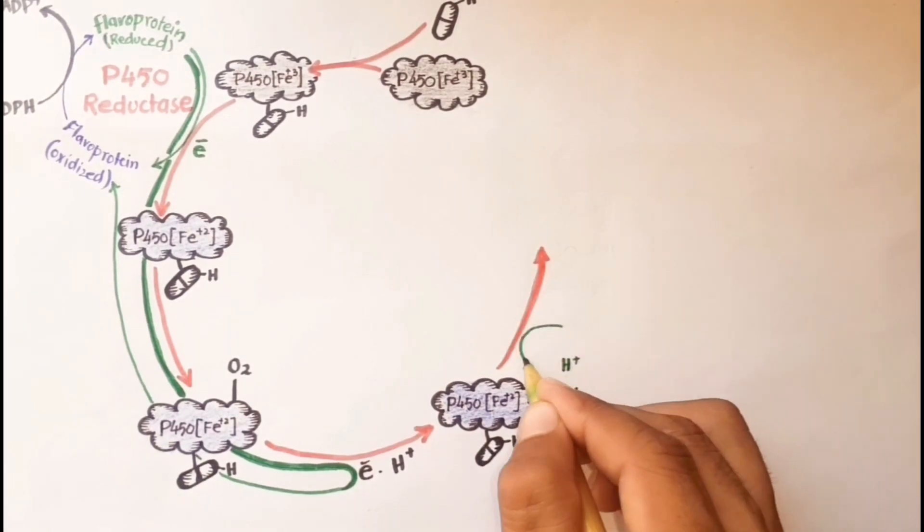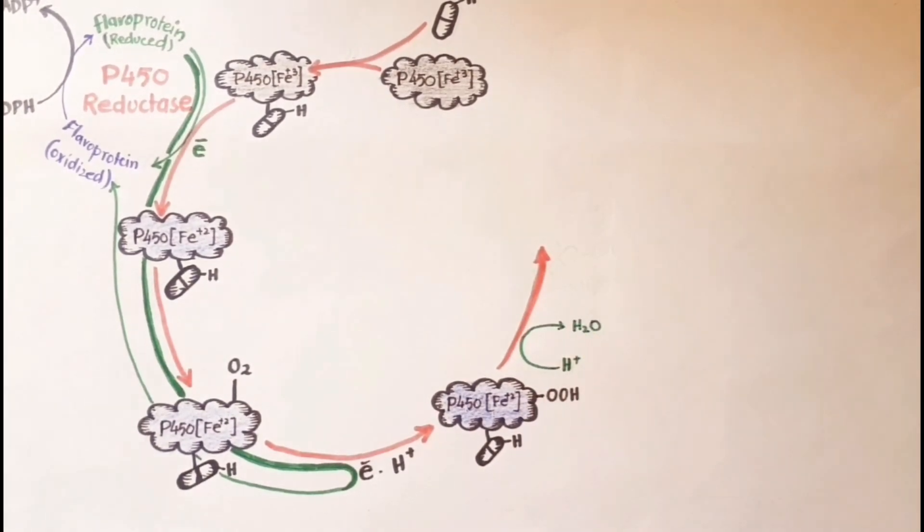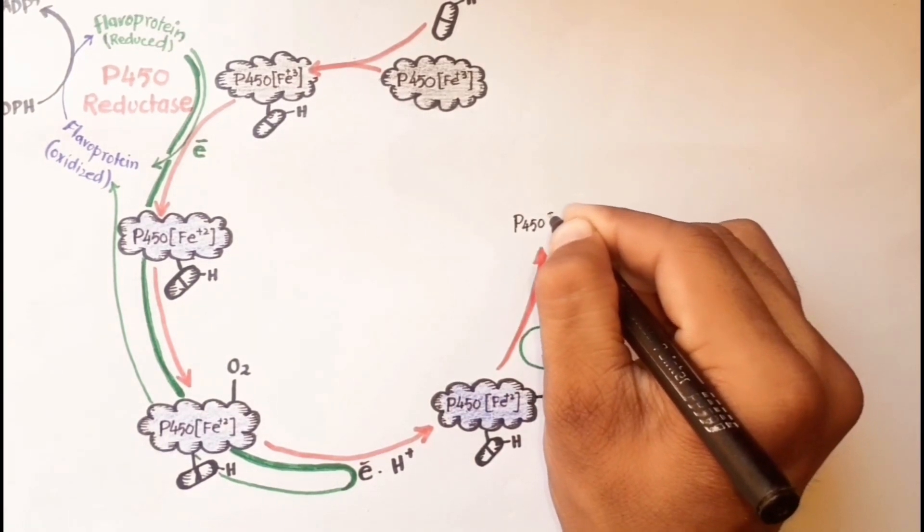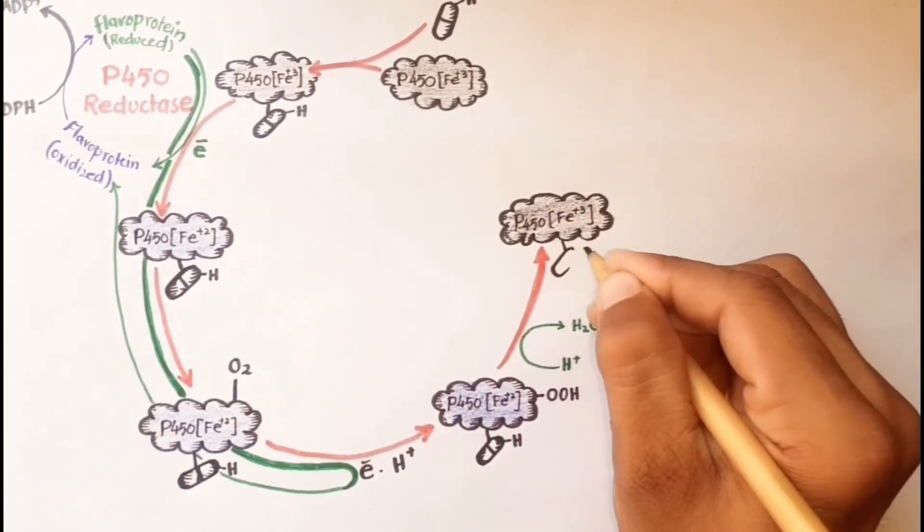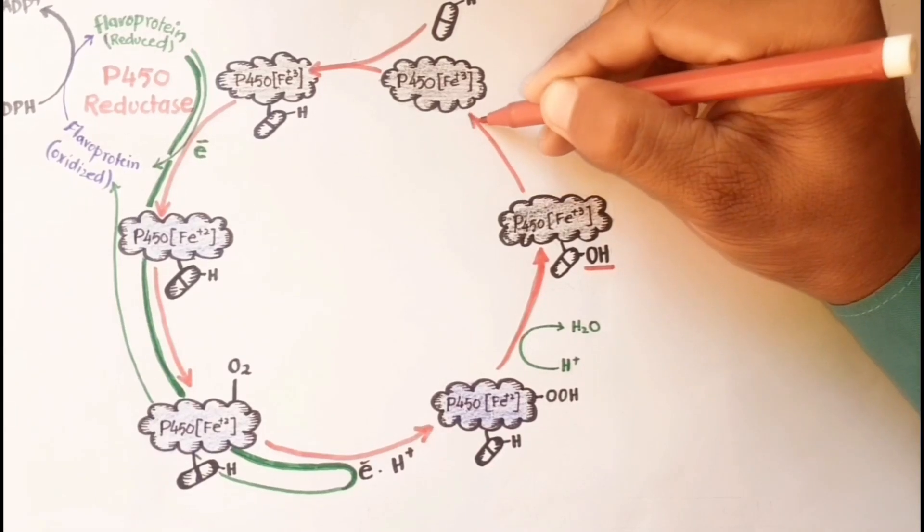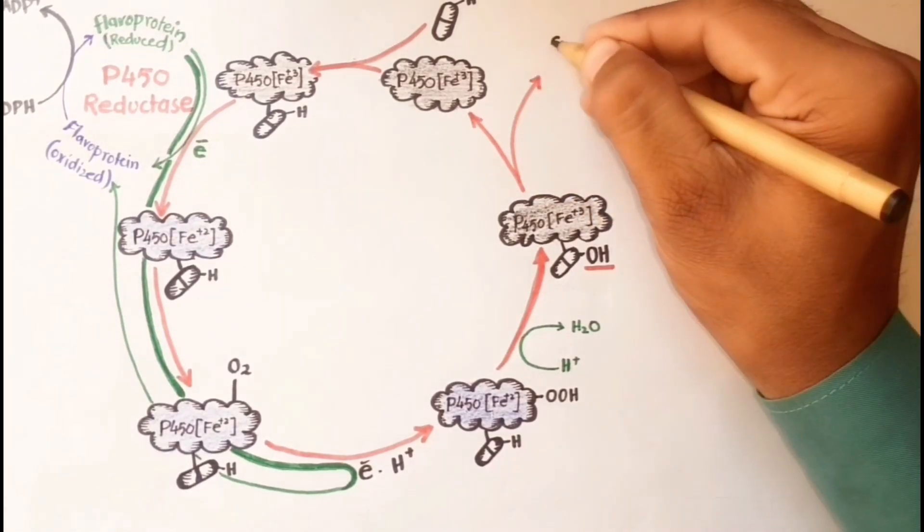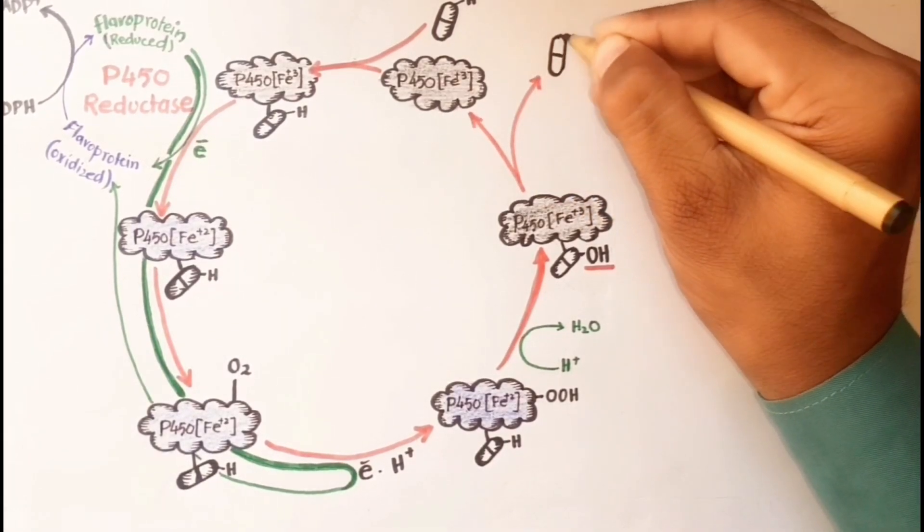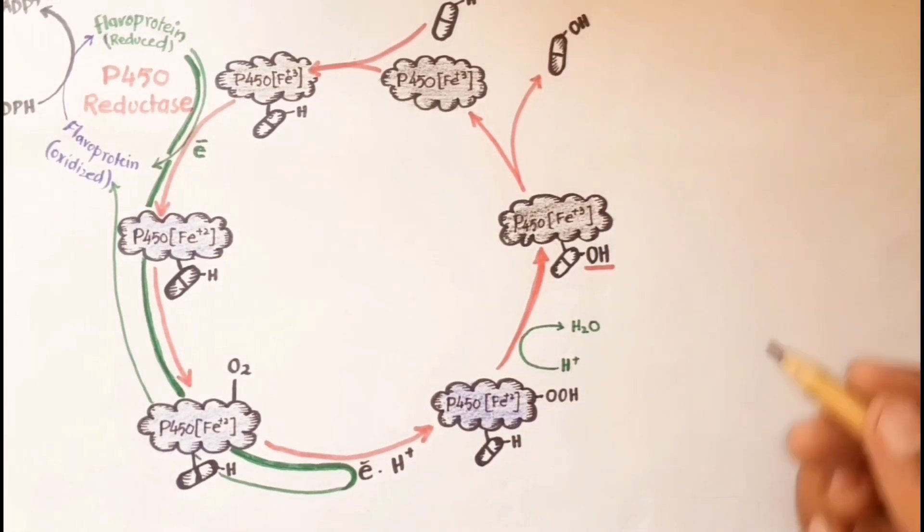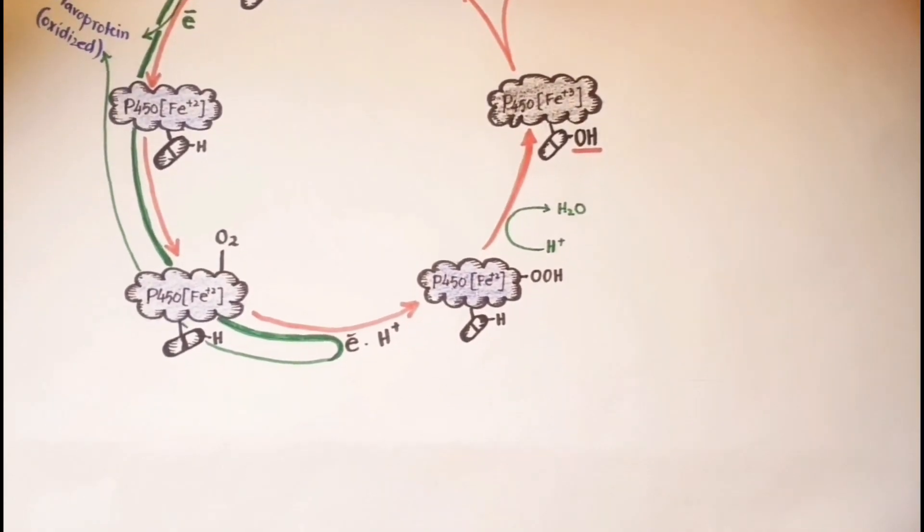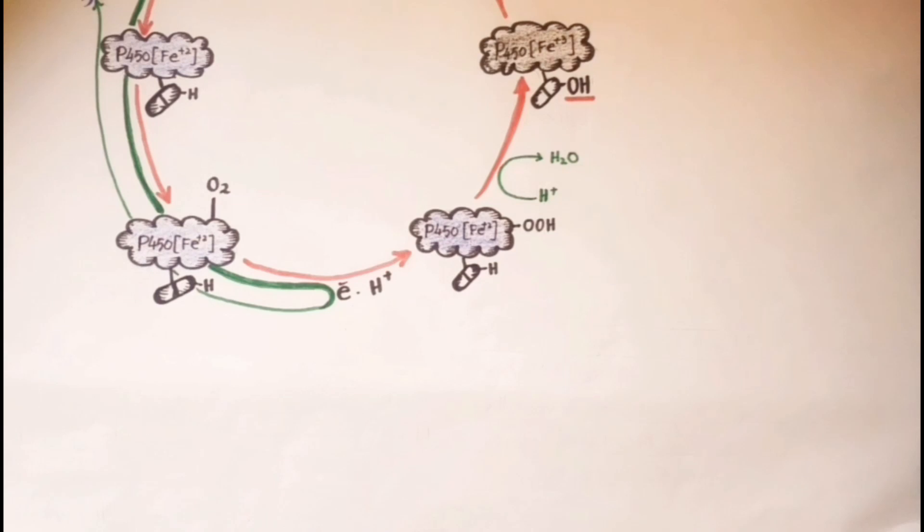This combines with another proton to yield water with the liberation of oxidized drug from the complex in the next step and regeneration of P450 enzyme. In this oxidation-reduction process, two microsomal enzymes play a key role: NADPH cytochrome P450 oxidoreductase and cytochrome P450.